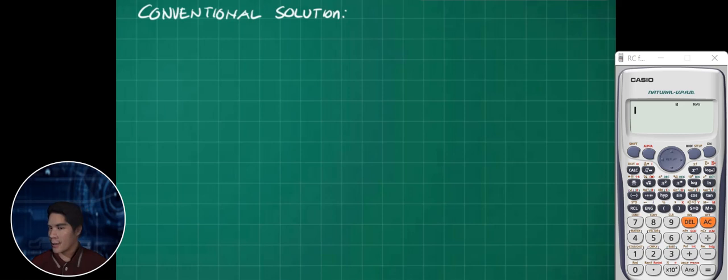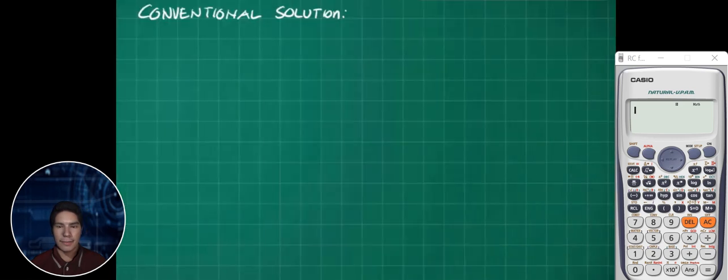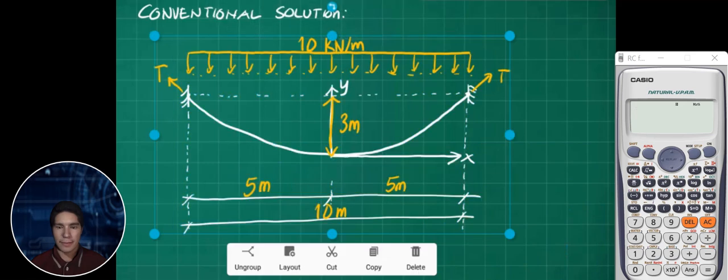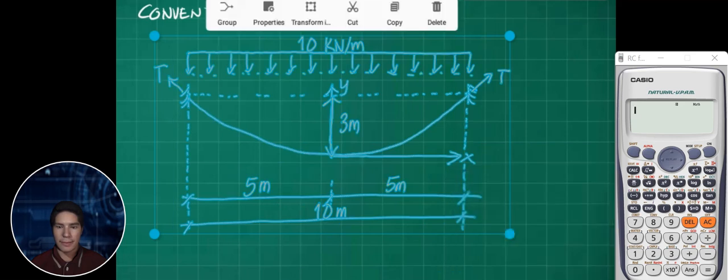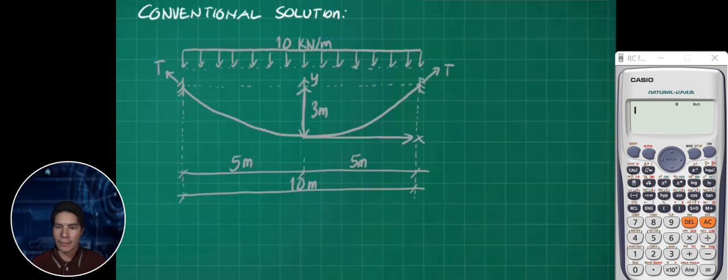One property of the parabolic curve is that we can separate the lowest point and the support. For instance, we can consider just this portion - the lowest point and one support. We can consider this as one segment with the uniformly distributed load.